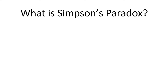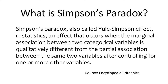Before we begin, let's start with a definition of Simpson's Paradox, also called the Ewell-Simpson effect: in statistics, an effect that occurs when the marginal association between two categorical variables is qualitatively different from the partial association between the same two variables after controlling for one or more other variables.